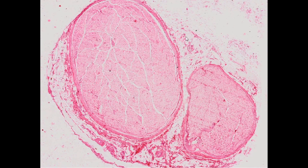The nerve trunk — H&E staining. The nerve trunk is a structure made up of nerve fibers in the peripheral nervous system. It is surrounded by fibrous connective tissue, the branches of which penetrate the nerve, separating both individual bundles of nerve fibers and individual fibers.